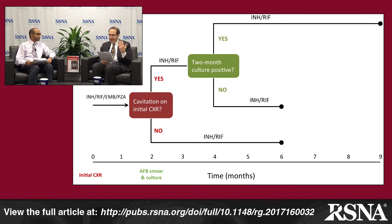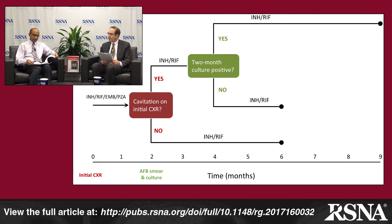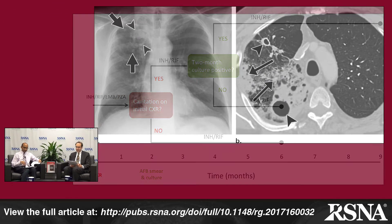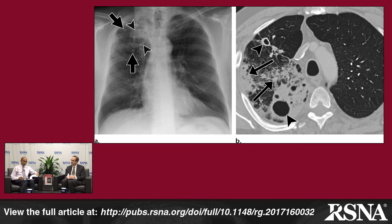Consolidation, cavitation, and centrilobular nodules are hallmark imaging features of active post-primary tuberculosis. Looking at figure 11, which has the chest x-ray and CT, the arrows point to consolidations — airspace opacities with air bronchograms visible on CT. On a non-contrast CT, vessels would be hard to see through areas of consolidation. The arrowheads depict cavities or rim opacities with internal lucencies, which are easier to see on CT, though management pathways are really dependent on whether cavitation is seen on the chest x-ray.